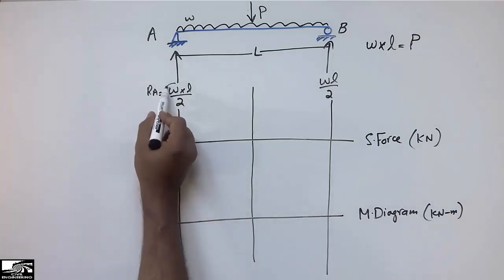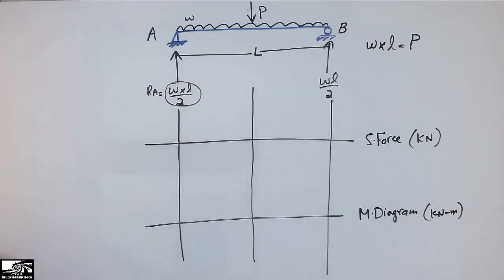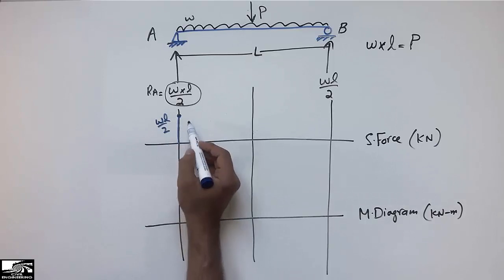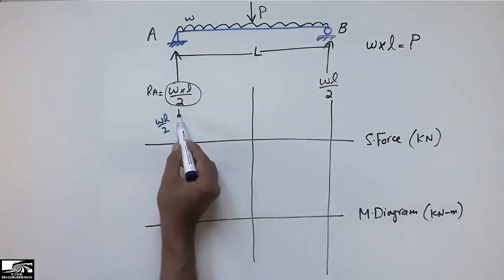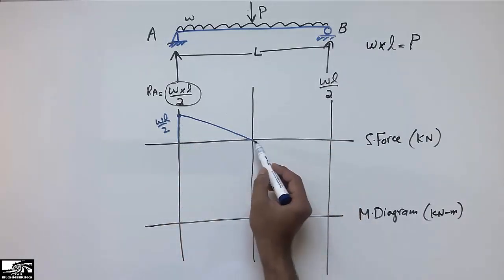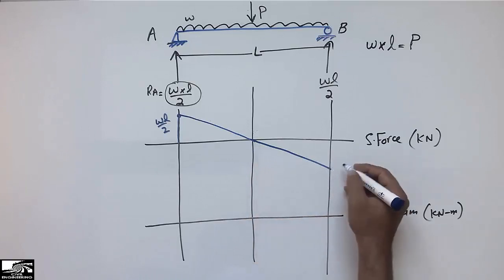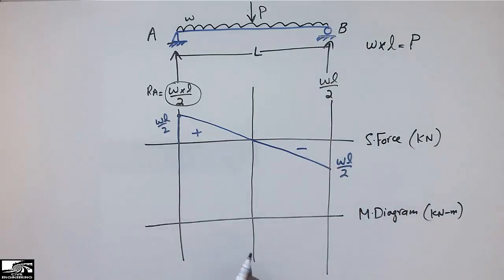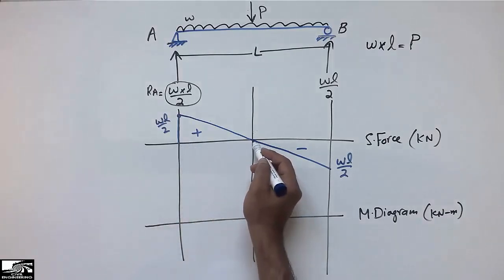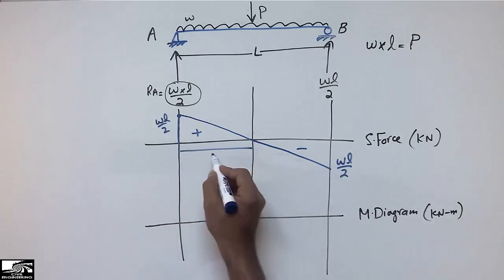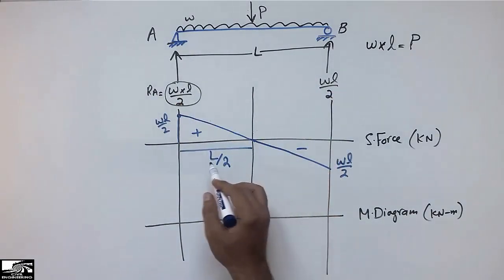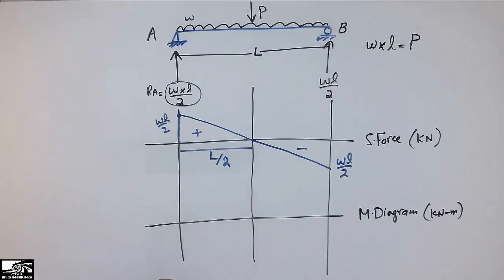Since the support reactions act upward, the shear force starts at +WL/2 at support A. Due to the uniformly distributed load, it decreases linearly, becoming zero at the midpoint, and then reaches a negative value of −WL/2 at support B. The shear force becomes zero at mid-span because the UDL acts over the full length, so zero is reached at L/2.